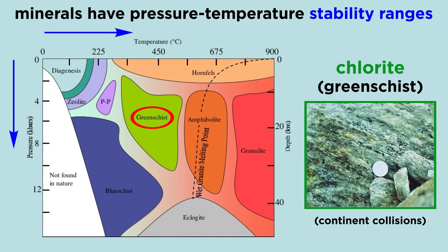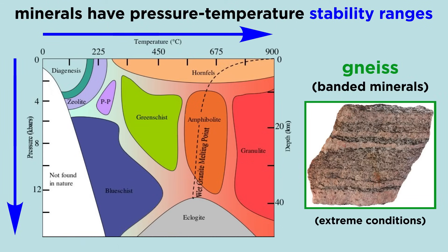When the pressure and temperature follow the normal geothermal gradient, as in the typical continent-continent collision, the green mineral chlorite forms. These rocks are called green schist. When both the temperature and pressure are extreme, minerals tend to become segregated during recrystallization, and the light and dark minerals are banded in the rock, which is called gneiss.